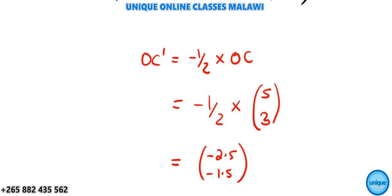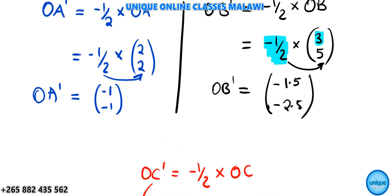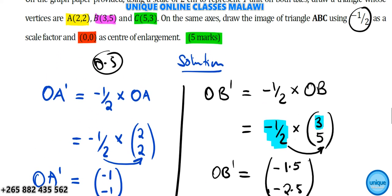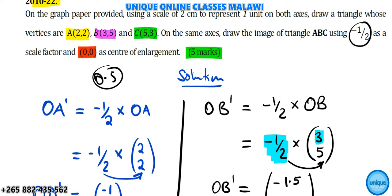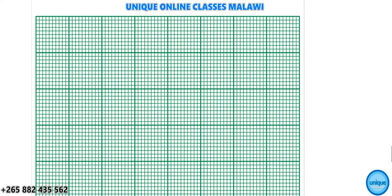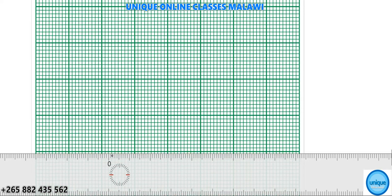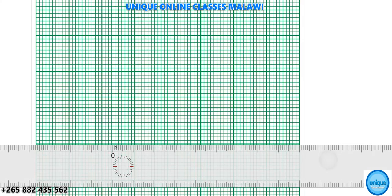Now we have the image coordinates: A'(-1,-1), B'(-1.5,-2.5), C'(-2.5,-1.5). We should draw the triangle. Take a ruler and use the new coordinates to plot the image triangle on the graph.